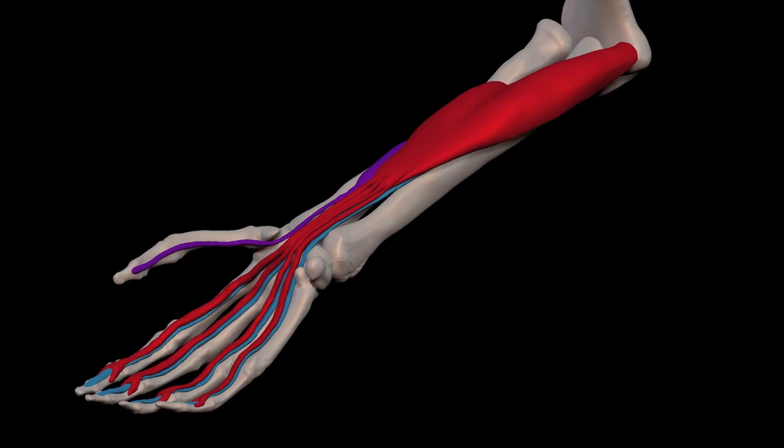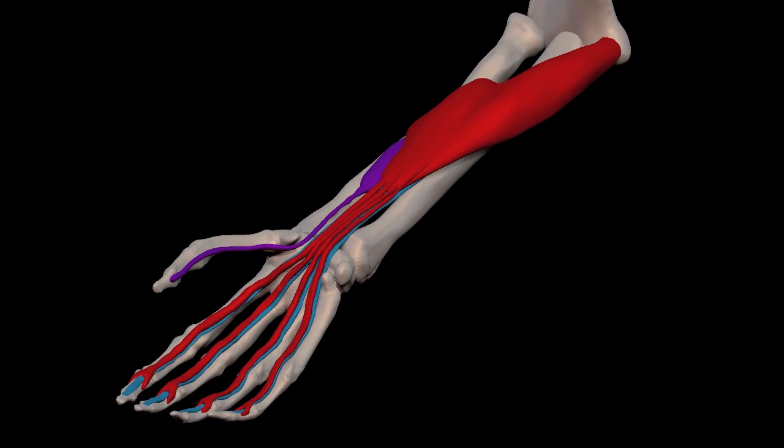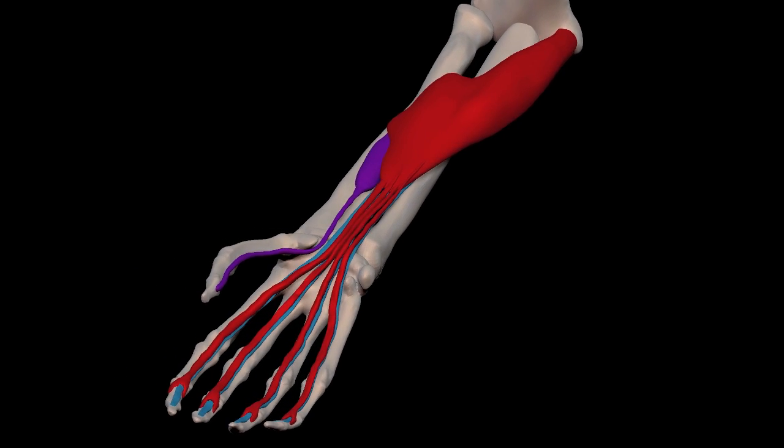When we add the flexor pollicis longus, we can see how the flexor digitorum superficialis is layered above that muscle as well.